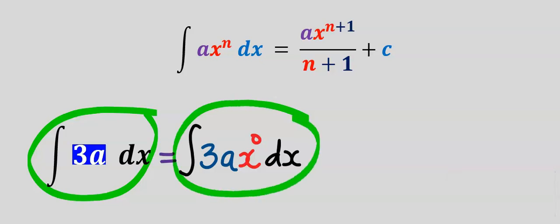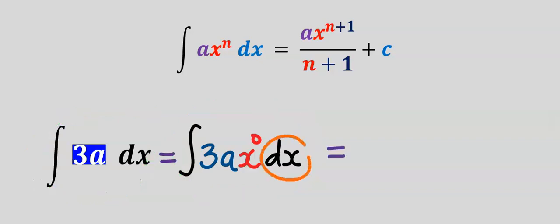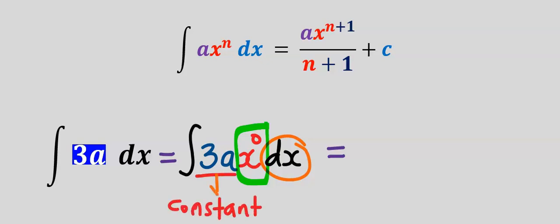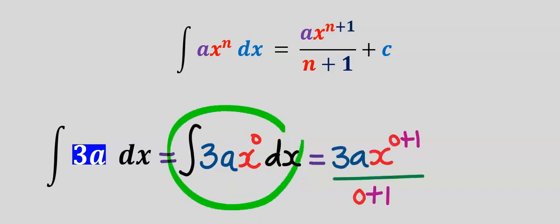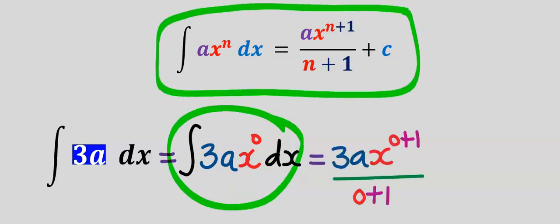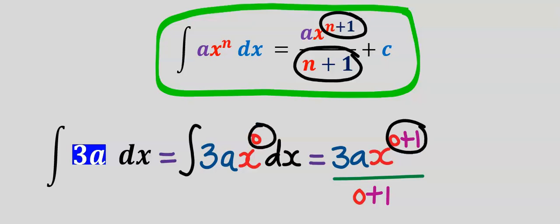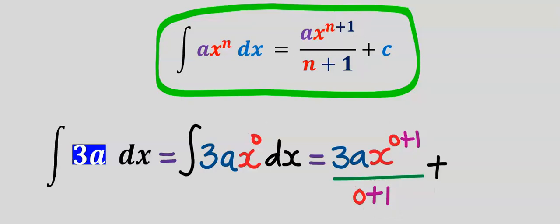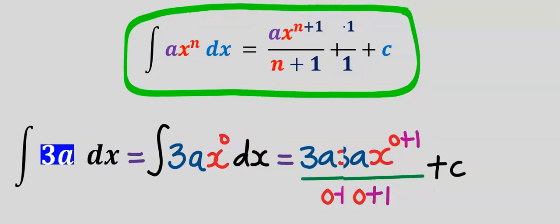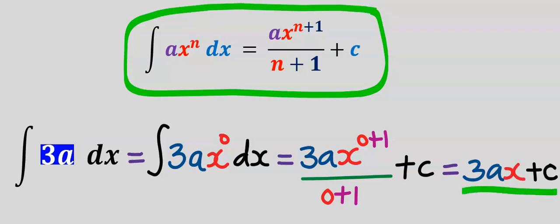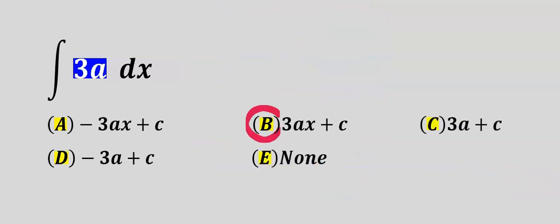Next, let's consider this function. I can rewrite the question: both forms are the same. I am integrating with respect to x, so I add an increment to x. Here 3a is just a constant. Applying the formula, I add one to the power and bring it down to the denominator, then add plus c. The answer is 3ax plus c. From the options our answer is b.